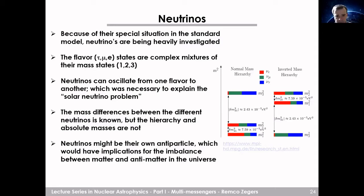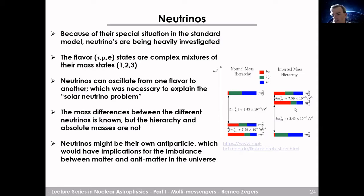The mass differences between the different neutrinos are known, but not the hierarchy — we don't know which mass eigenstate has what mass, and this is something researchers are still working on. Neutrinos might be their own antiparticle — we don't know — but if true, it would have implications for the matter-antimatter imbalance in the universe, another active research topic.